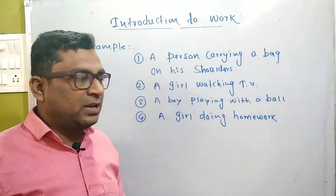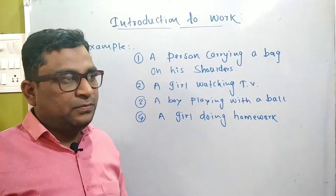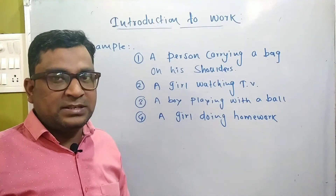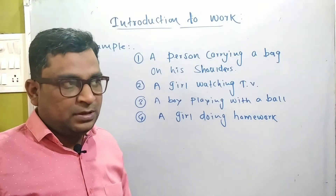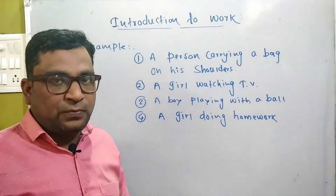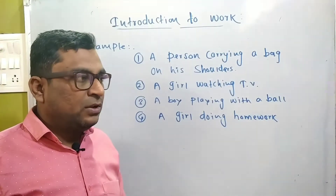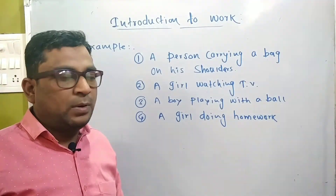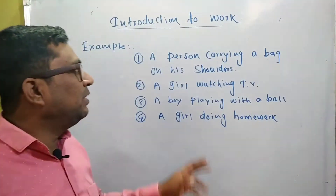But basically work is divided into two parts — the first is called mental work and the second is called physical work. If we observe these four different examples, everywhere we can conclude that as a normal person we can say that work is done.